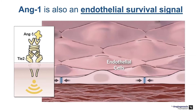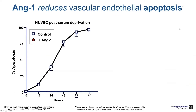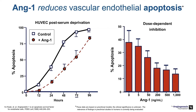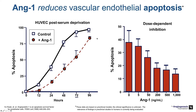Angiopoietin 1 is also an endothelial cell survival signal. In a preclinical ex vivo endothelial cell culture model, as you add more exogenous angiopoietin 1, you can see a reduction in levels of apoptosis. On the x-axis, increasing levels of angiopoietin 1 drive a decrease in endothelial cell apoptosis.